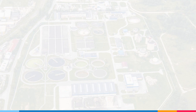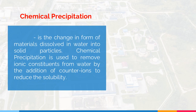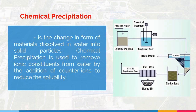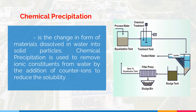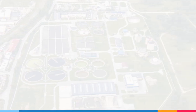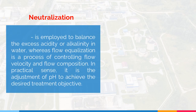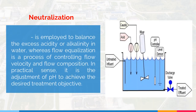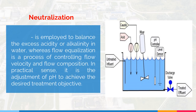Next is chemical precipitation. Chemical precipitation is the change in form of materials dissolved in water into solid particles. Chemical precipitation is used to remove ionic constituents from water by the addition of counter ions to reduce the solubility. Next, we have neutralization. Neutralization is employed to balance the excess acidity or alkalinity in water, whereas flow equalization is a process of controlling flow velocity and flow composition. In practical sense, it is the adjustment of pH to achieve the desired treatment objective.